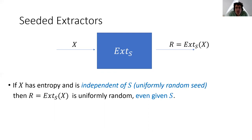The idea is that there will be one uniformly random seed that is part of the extractor. It acts as a catalyst and helps us extract randomness from the sample x. What we want is that as long as x has entropy and comes from some distribution independent of the seed, then the extracted randomness r would be uniformly random, even conditioned on the seed s. So the randomness is actually coming from x, not from s, because the output is uniformly random even given the seed.